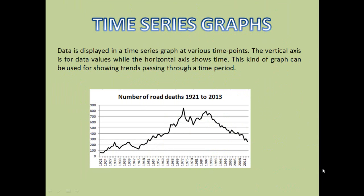The next type is the time series graph. Data is displayed at various time points, with the vertical axis showing data values and the horizontal axis showing time. This type of graph is used for showing various trends across time periods. For example, the number of road deaths from 1921 to 2013 shows an increase, then a downfall from 1939 to 1945, then a further increase.